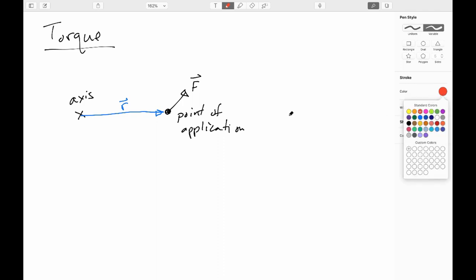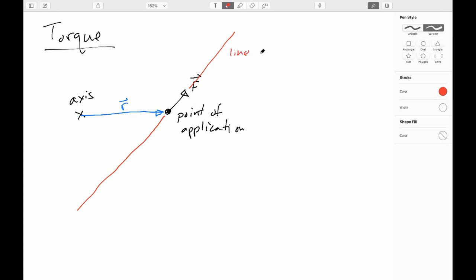And what physicists have settled on is they say, we need to define one other thing here. We're going to draw a line that passes through the point of application. And it is a line, a geometric line that extends as far as you need. And we call this line the line of action for the force, which is just saying the force is being directed along this line through this point.